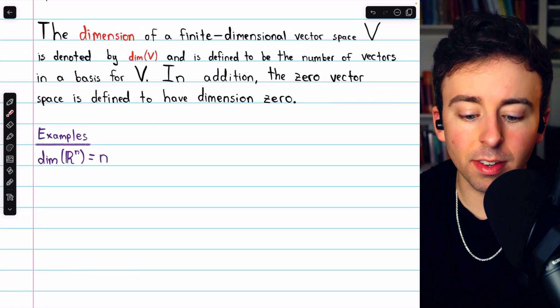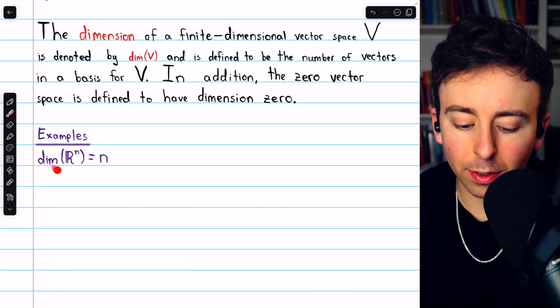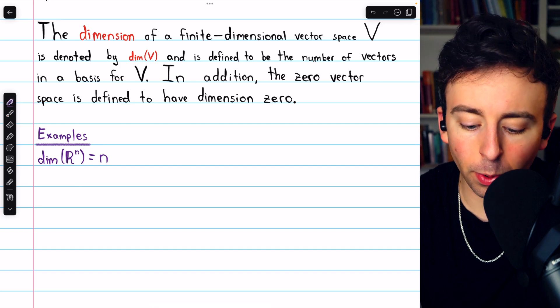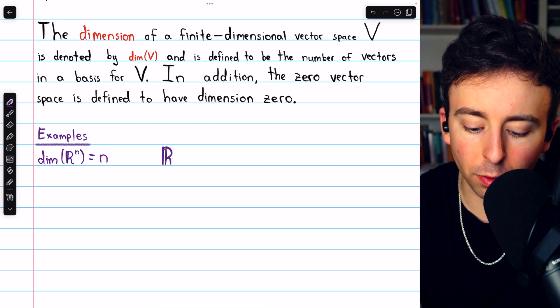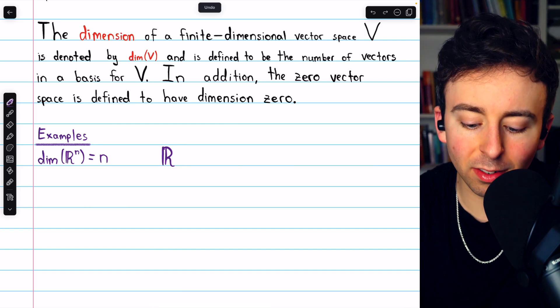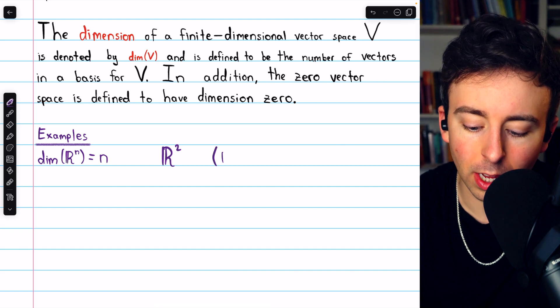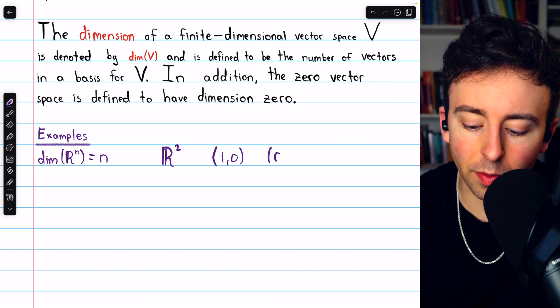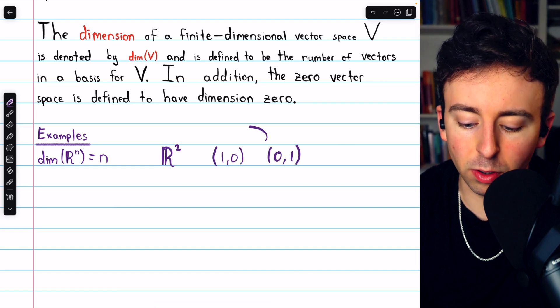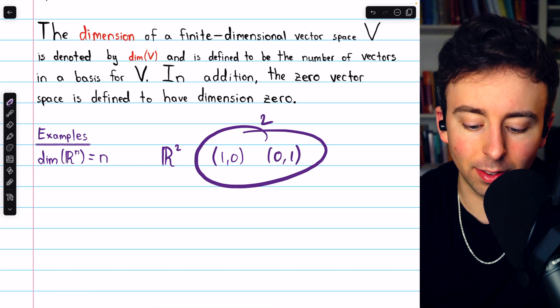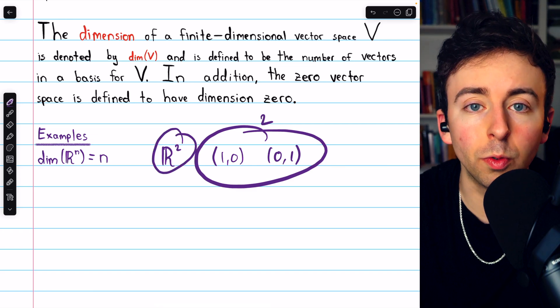Let's take a gander at some examples. The dimension of the vector space R^n, unsurprisingly, is n. For example, the dimension of the vector space R² is 2, because there are two vectors in the standard basis. There are two vectors in the standard basis, and so the dimension is 2. Any basis of this space would have two vectors.